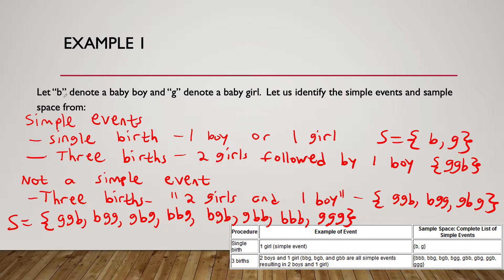For example, let B denote a baby boy and G denote a baby girl. Let us identify the simple events and sample space from this table. For a single birth, you can have one boy or one girl, so the sample space would just be one B and one G.